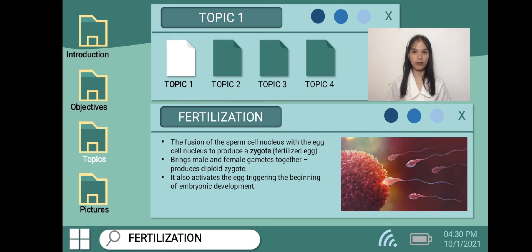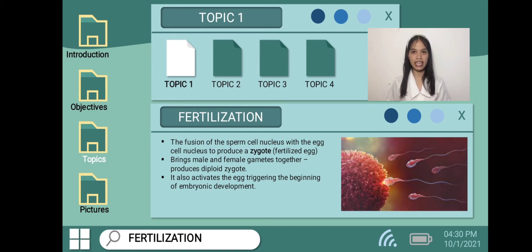The zygote contains all of the genetic material needed to form a human, half from the mother and half from the father. It also activates the egg, triggering the beginning of embryonic development. Once inside the female reproductive tract, sperm use their tail-like flagella to swim toward the egg. A chemical signal around the egg called progesterone boosts the sperm's movements into a hypermotile state, making tail movements stronger and able to generate more swimming force.